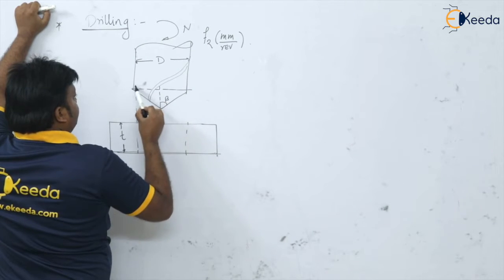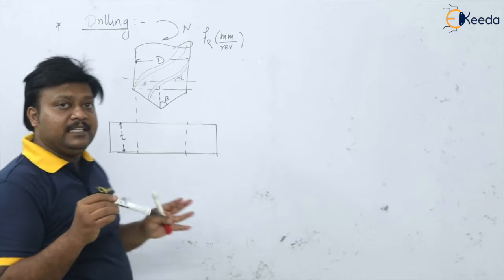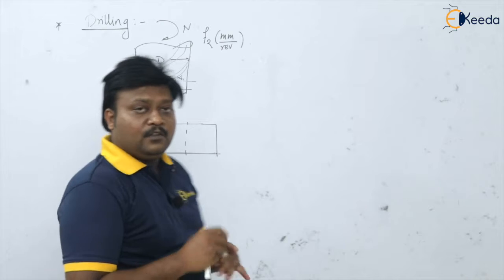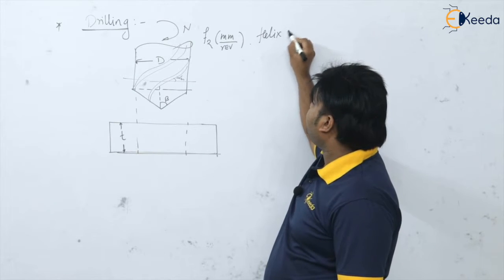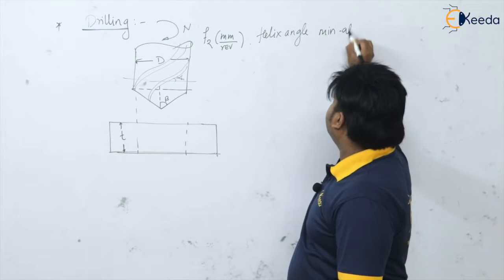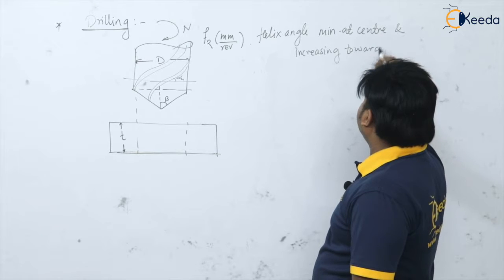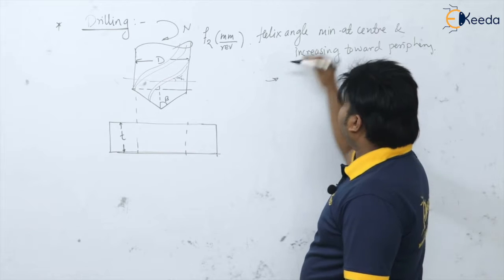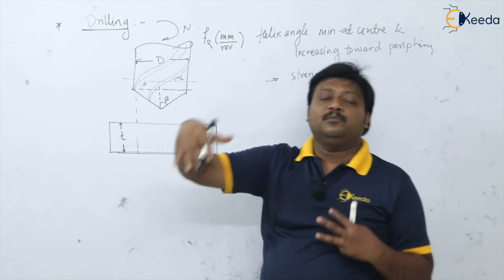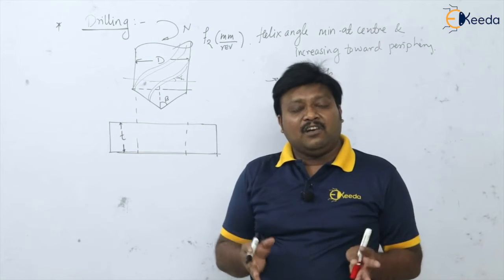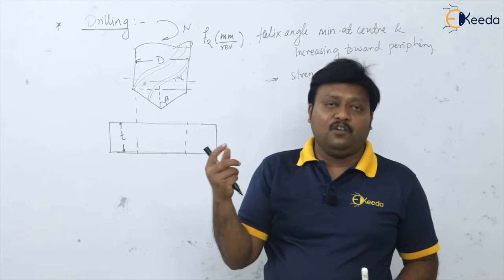The drill has helix angles — as we have seen in oblique to orthogonal cutting. This is the helix angle alpha H, which is minimum at the center and goes on increasing towards the periphery in the conical portion. Why is it minimum at the center? Because the minimum helix angle at the center gives the required strength for the drill. As it goes on increasing towards the periphery, it creates the passage for the chips to come out, since in drilling the chips come out through the drill only.